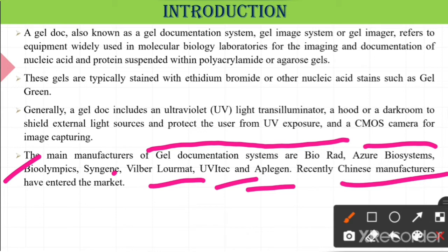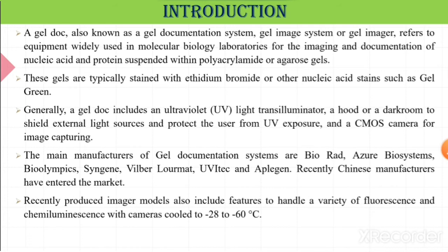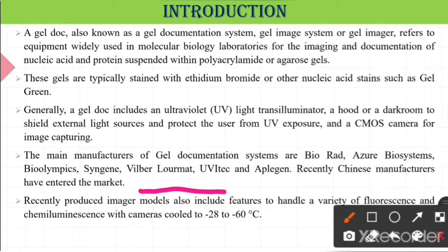The main manufacturers of gel documentation systems are Bio-Rad, Azure Biosystems, Bio-Rad, Analytik Jena, UVP, and Alpha Innotech. Recently Chinese manufacturers have entered the market. Recently produced imager models also include features to handle a variety of fluorescence and chemiluminescence with cameras cooled to minus 28 to minus 60 degrees — one of the new features some companies have added.